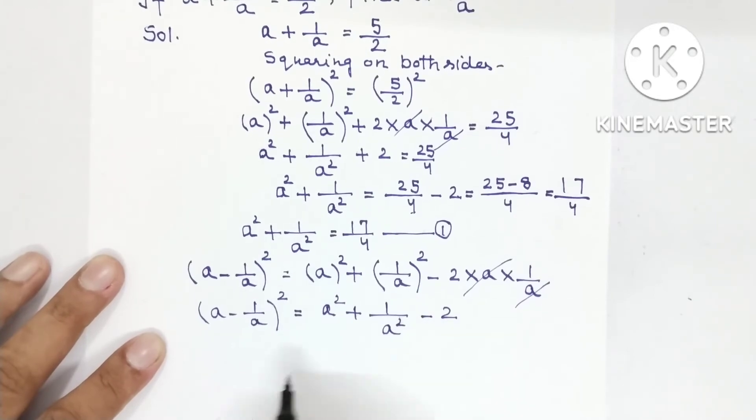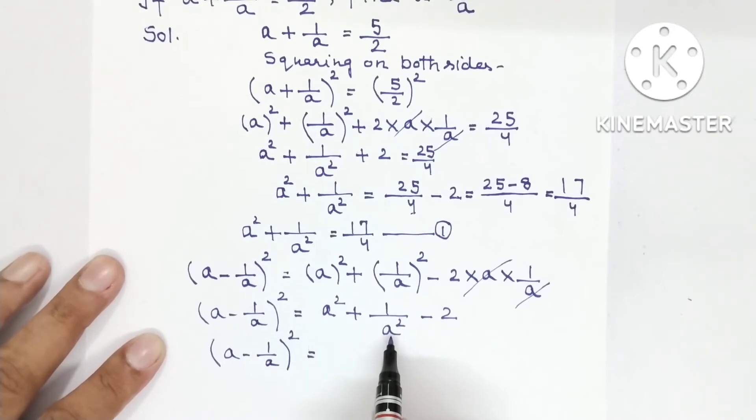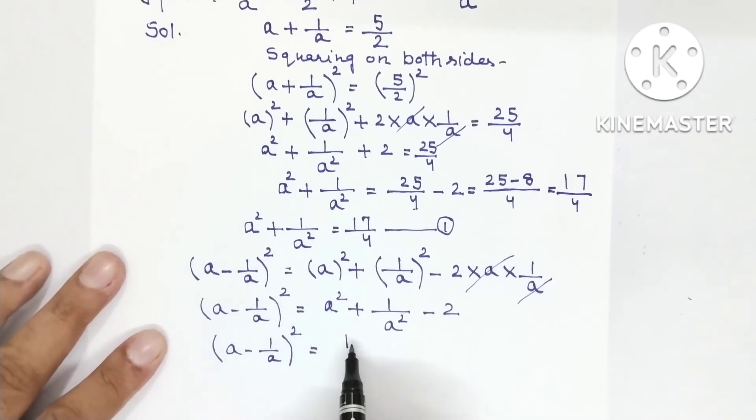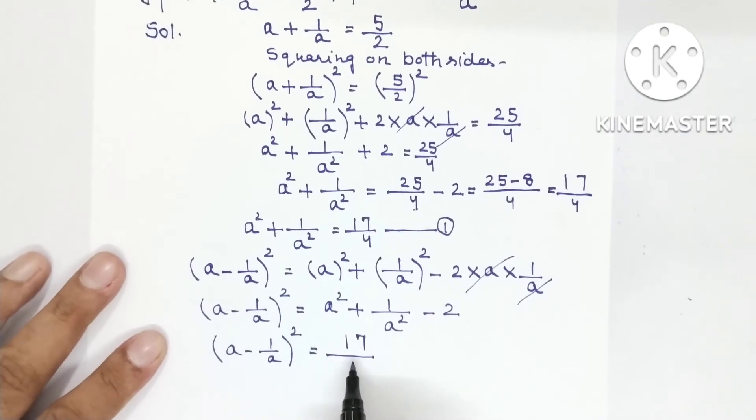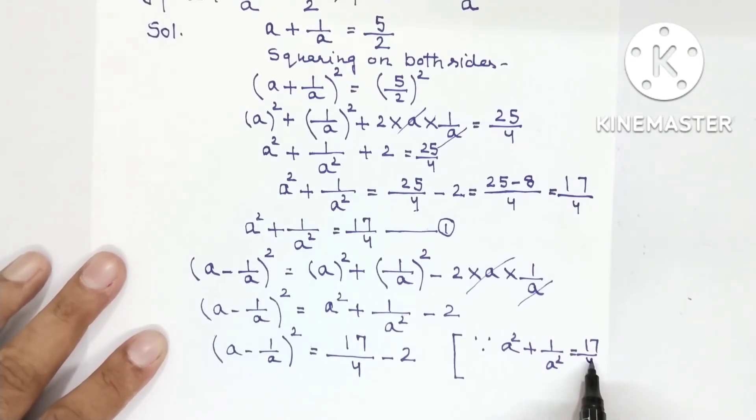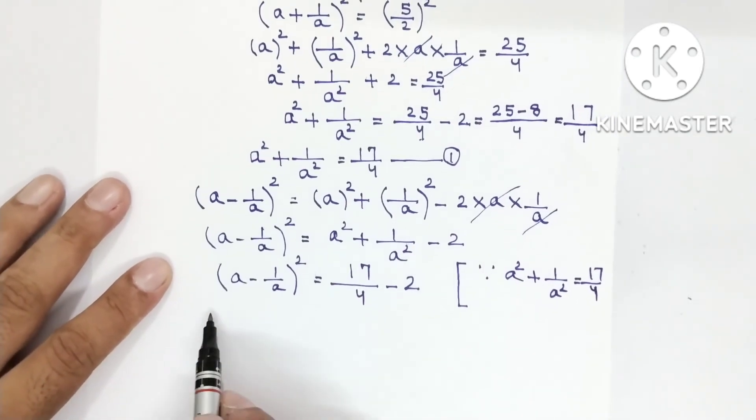Minus 2. So (a - 1/a)² will remain the same. You have a² + 1/a². Where is the value? Equation number 1. Here put it. 17/4 minus 2. Because a² + 1/a² has been found equal to 17/4. Now we will solve it.